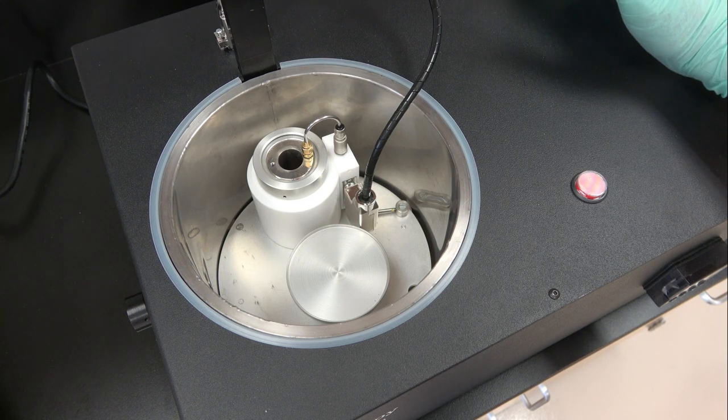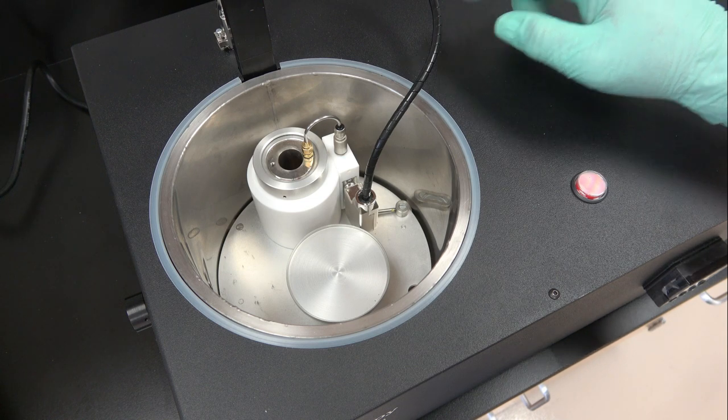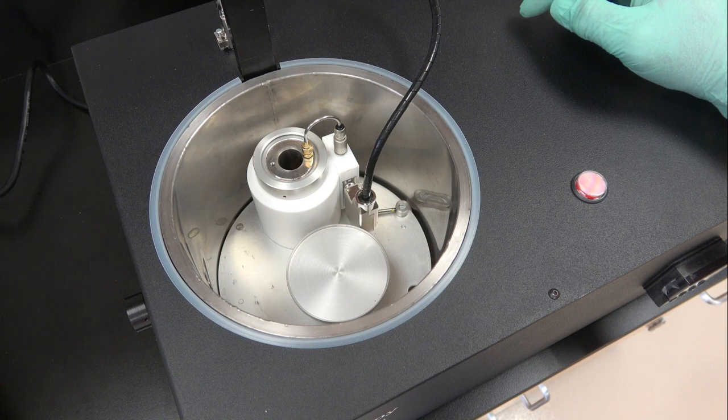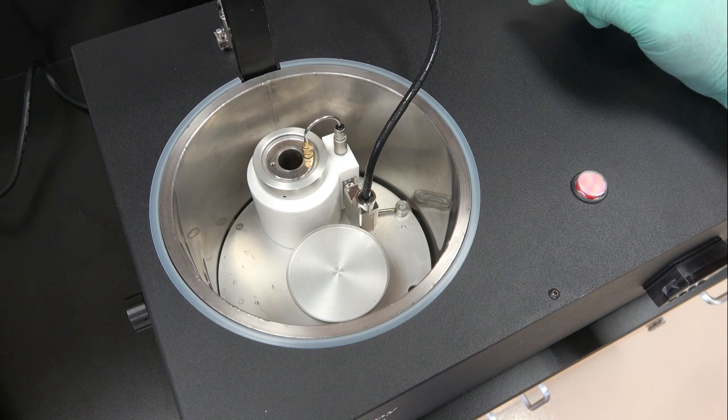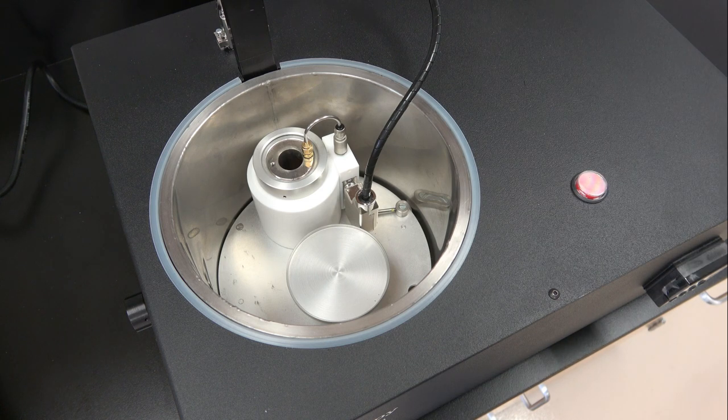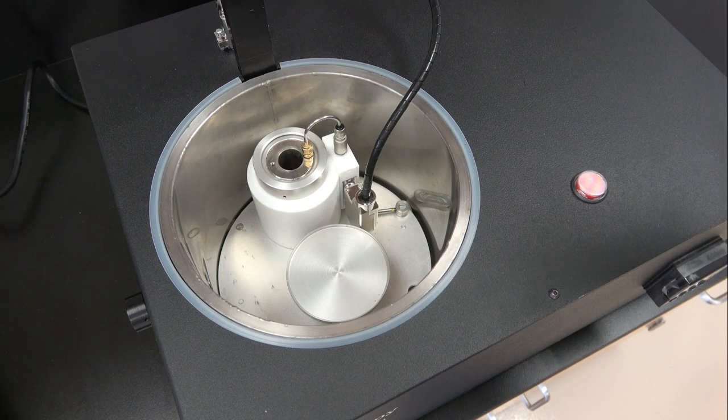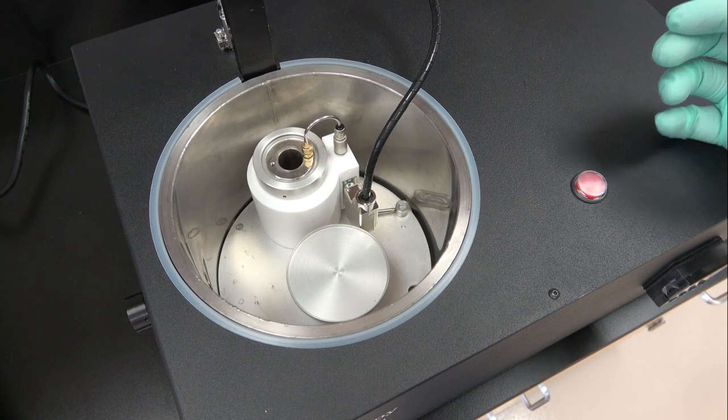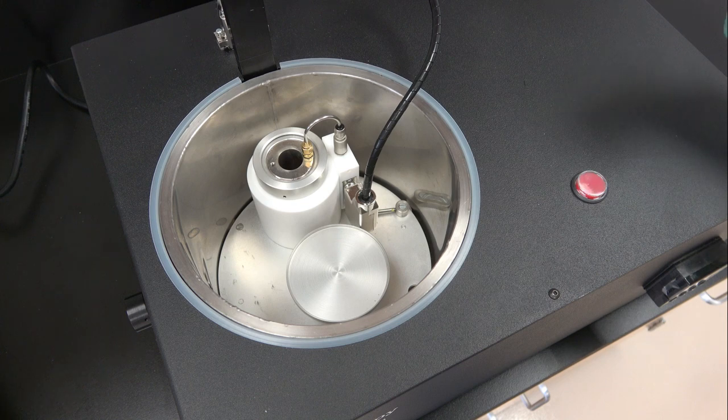When the temperature is below minus 140, you can then start to introduce your cryogen into the condensation chamber, and once it's full and your temperature is stable at either ethane or propane temperature, whatever you're working with, you can go ahead and proceed to freeze.